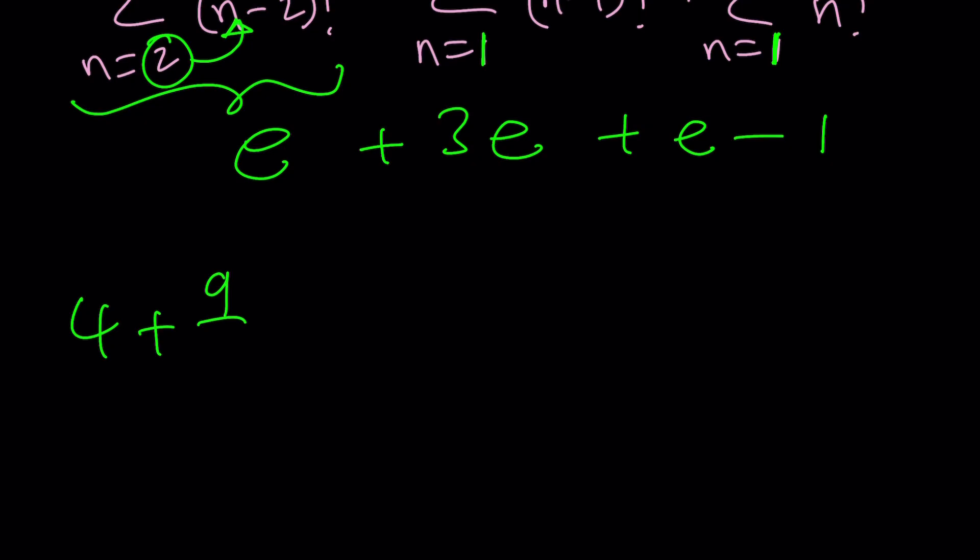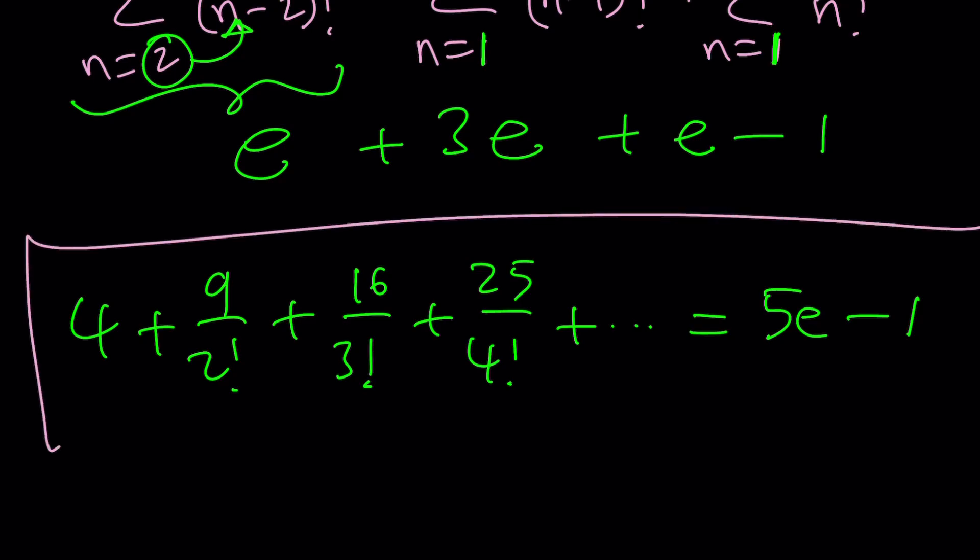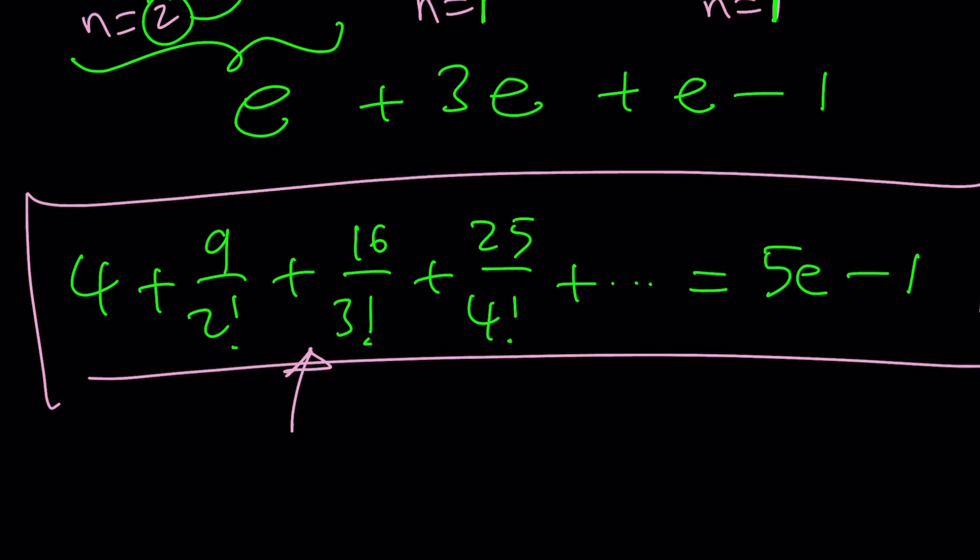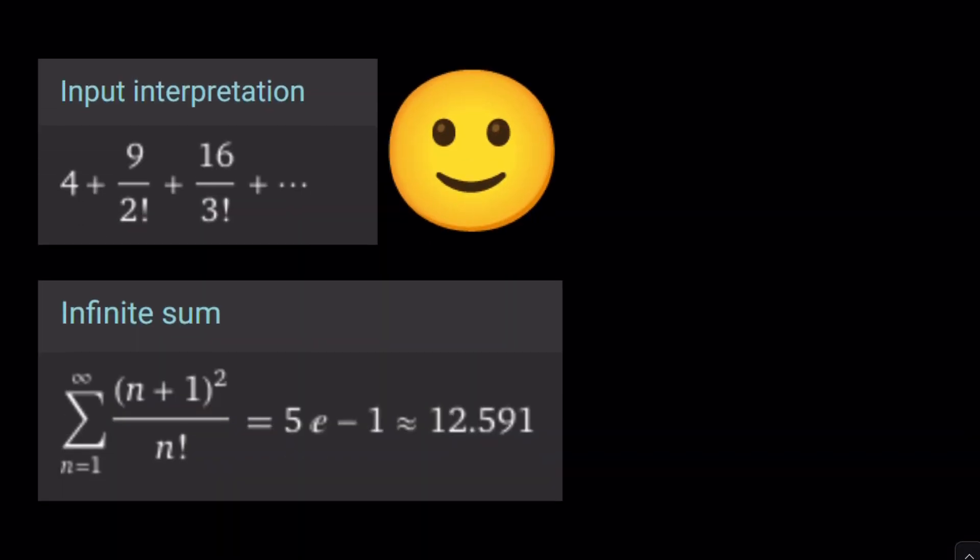If you add everything else: 4 plus 9 over 2 factorial plus 16 over 3 factorial plus 25 over 4 factorial dot dot dot equals 5e minus 1. Now let's go ahead and take a look at Wolfram Alpha. Do you think Wolfram Alpha can evaluate the sum if I give it the left hand side? What do you think? Ready? Ta-da! Yes, Wolfram Alpha can interpret this correctly. Good job Wolfram Alpha! You found the answer and numerically it's about 12.591.